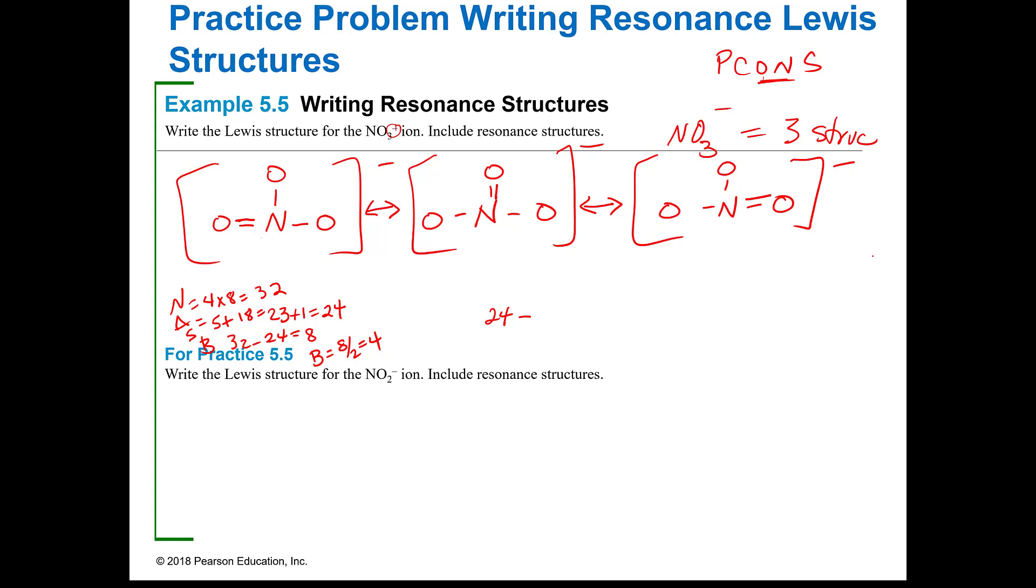I go back to my 24 and I have 2, 4, 6, 8 in bonds which gives me 16. Then I'm going to fill the octets. This one needs four because it's sharing a double bond, this one needs six, and this one needs six. So that's 16 equals zero so I can go ahead and do that for these.